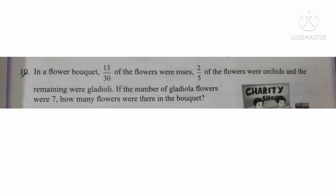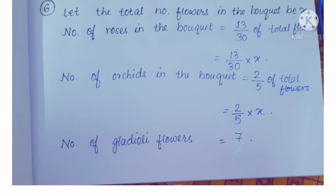Come to the next question, question number 10. Here a flower bouquet is given where roses, orchids, and gladioli flowers are present. The number of roses is equal to 13 by 30 of the total flowers in the bouquet. Similarly, the number of orchids is equal to 2 by 5 of the total flowers. The remaining flowers are gladioli, and the number of gladioli flowers was 7. We have to find the total number of flowers in the bouquet.